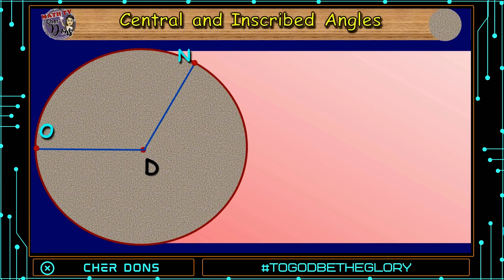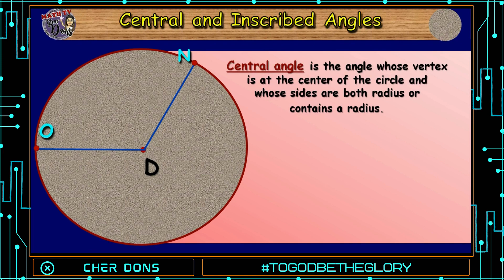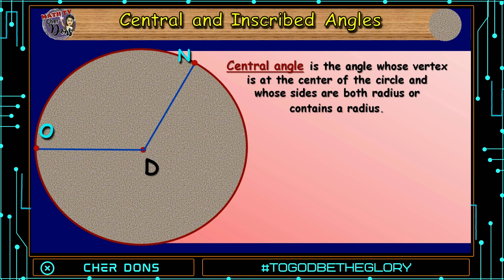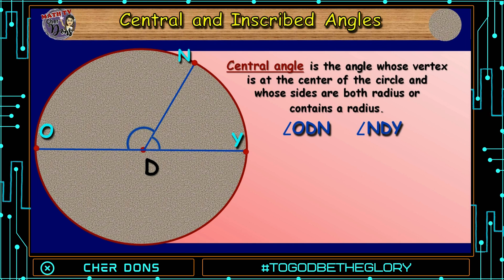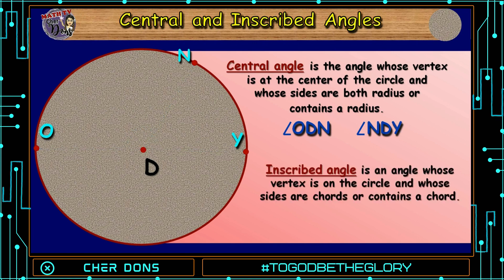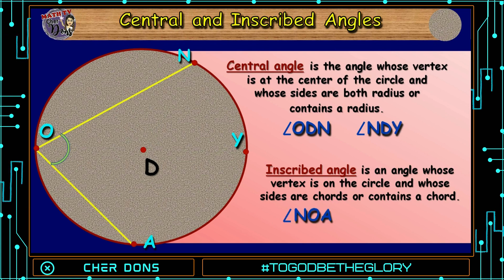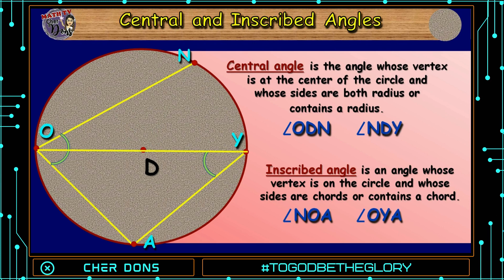We go now to central and inscribed angles. A central angle is the angle whose vertex is at the center of the circle and whose sides are both radii or contain a radius. The central angles here are angle ODN and angle NDY — their vertex lies on the center of the circle and their sides are both radii. An inscribed angle is an angle whose vertex is on the circle and whose sides are chords or contain a chord. We have angle NOA and angle OYA as perfect examples of inscribed angles — their vertex lies on the circle itself and their sides are chords.